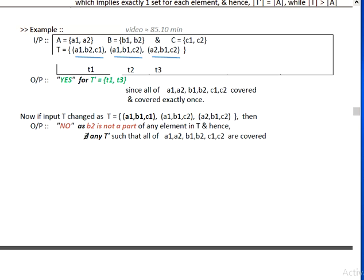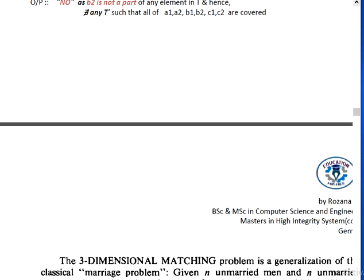Now, if the input T is changed, let's say T equals {(a1, b1, c1), (a1, b1, c2), (a2, b1, c2)}, then the output will be no. Because you can see that in T, which is a subset that comes from the cross product A×B×C, not all the elements are covered—b2 is missing from the A, B, C elements. If T does not contain all the elements, of course T prime, which is a subset of T, will also not contain all of the elements a1, a2, b1, b2, c1, and c2.